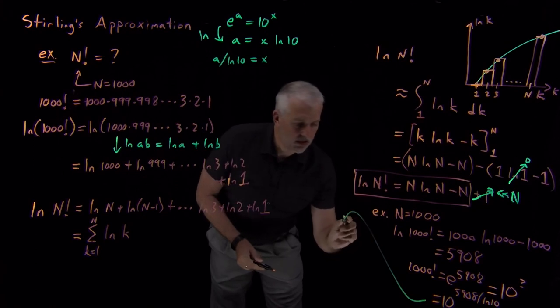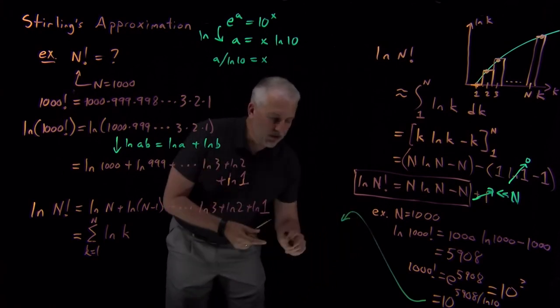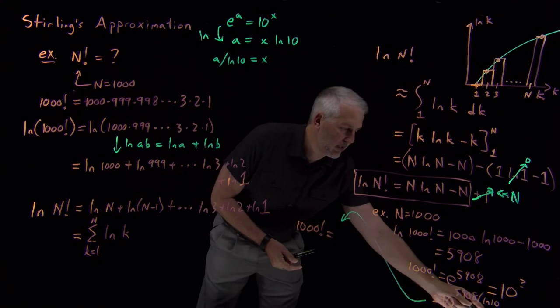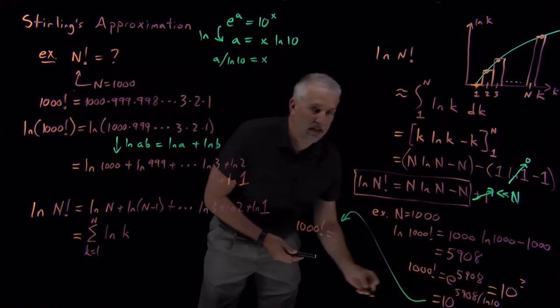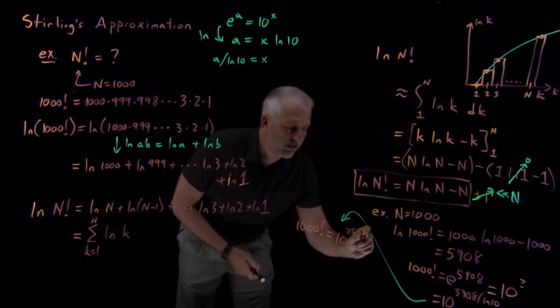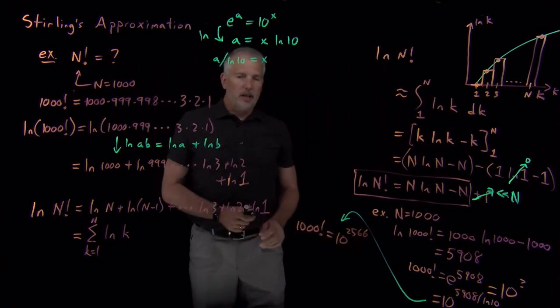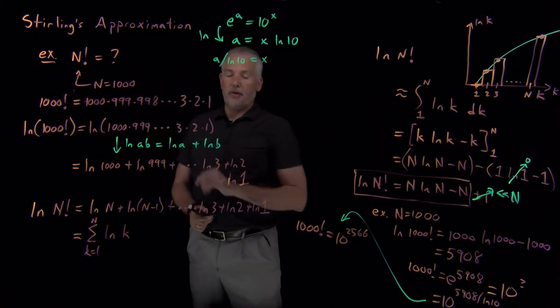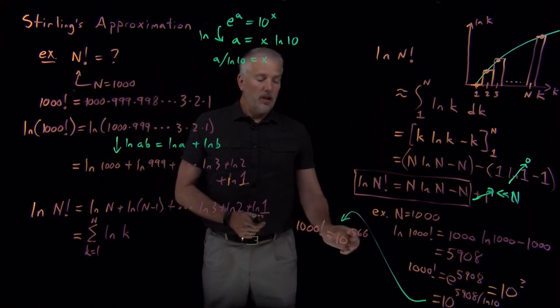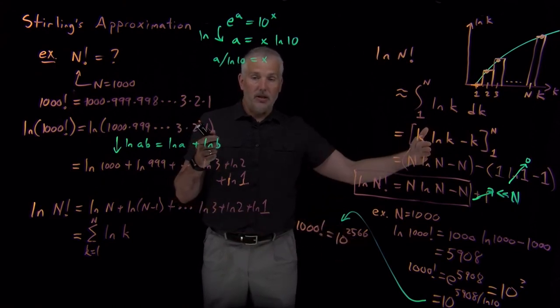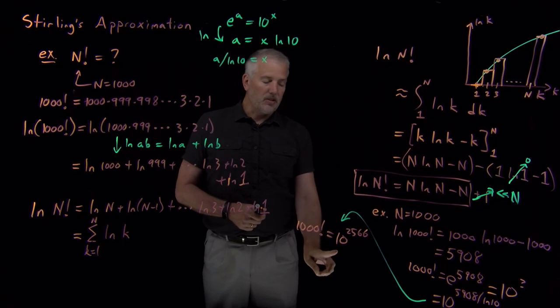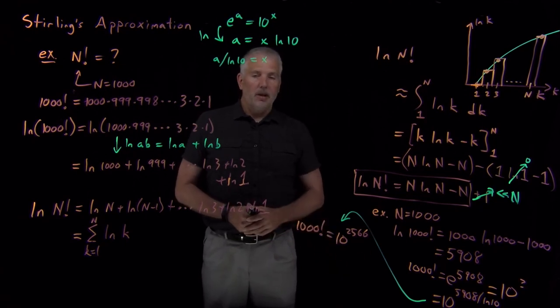So if I continue with that problem, I find that 1,000 factorial is 10 to the 5,908 over log 10. If I ask the calculator what 5,908 divided by log of 10 is, that works out to be 2,566 or so. So in the end, what we figured out is that we can find an estimate for the value of 1,000 factorial. 1,000 factorial is 10 to the 2,566. So a number that is 2,566 digits long, a number with four digits up in the exponent. It's large enough your calculator can't display it, but we can still, on paper, derive an estimate for what that number is.